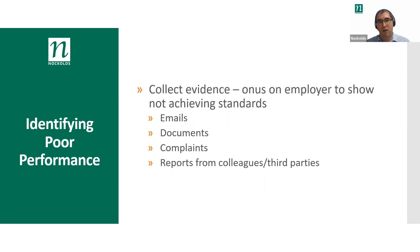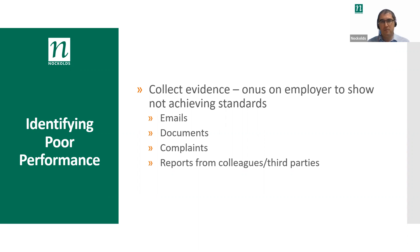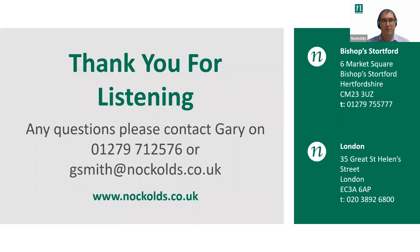When you are starting on the road towards the performance improvement plan, the onus is on the employer to show the employee is not hitting their standards. The key thing is evidence: emails, documents, complaints, reports from colleagues or third parties. If it is things like correcting poor standard of work, do you have both a copy of the original document and your corrected version to show the difference? You bring all of that evidence together before you sit down with the employee to take that next step and look to start the performance improvement plan.